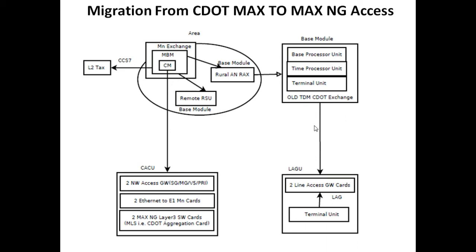Two types of chassis are required to deploy CDOT access: the LAGU chassis and the CACU chassis. Every co-located BM or remote BM is converted into a two-slot LAGU system working in redundant mode. After conversion, BPU and TPU are removed; only terminal units are retained, and in their place two LAGU cards are installed. LAGU cards handle PSTN to SIP conversion. The central module of the MBM is converted into a six-slot CACU chassis having two network access gateway cards, two Ethernet to E1 main cards, and two MAXengi layer-3 switch cards. These MLS cards are for aggregation of traffic from the LAGU chassis.